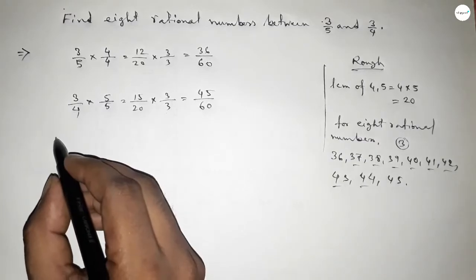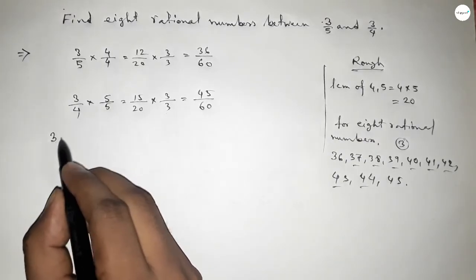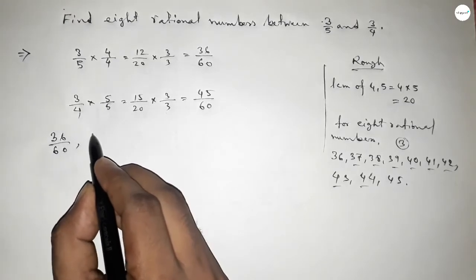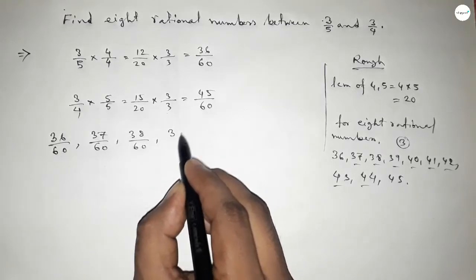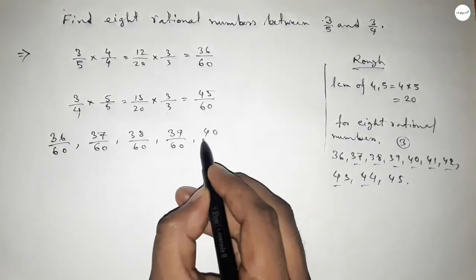Here all the rational numbers are: first one 36 over 60, 37 over 60, 38 over 60, 39 over 60, 40 over 60, and last one 45 over 60.